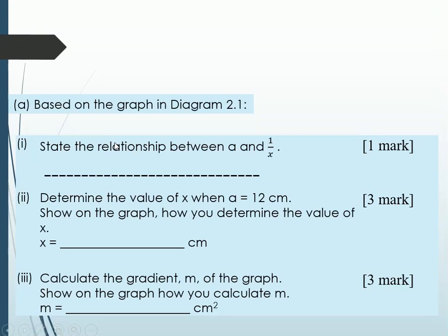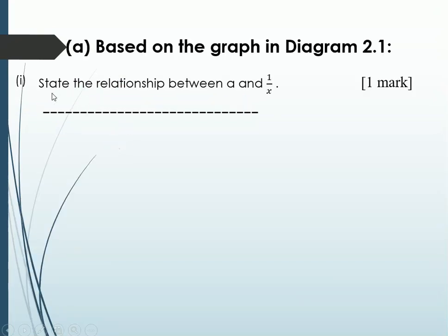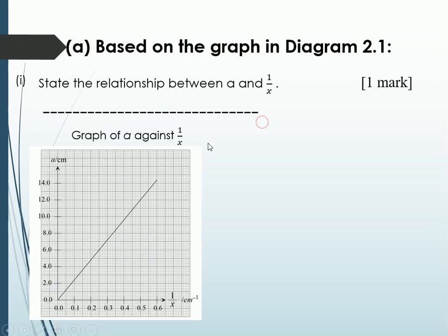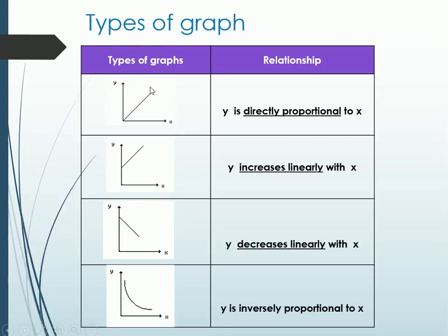State the relationship between A and 1 over x. One mark. So this is the graph given to us. A against 1 over x. You would see that this is a straight line passing through origin. So in maths, this is called a linear graph. The gradient is positive or negative. It's positive, isn't it?